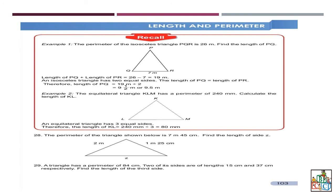Now you have to work out these questions. The perimeter of the triangle shown below is 7 meters 45 centimeters. Find the length of side Z. This is a triangle where one side is 1 meter 25 centimeters and the other is 2 meters. You need to find the third side. You will add the two known sides and subtract the total from the perimeter to find the answer.